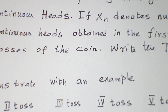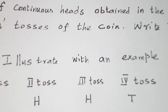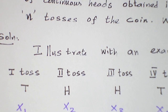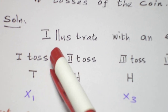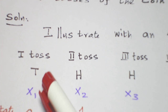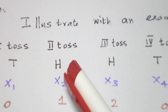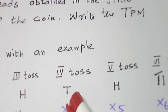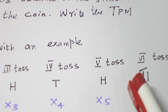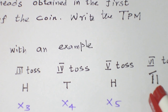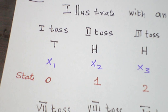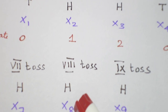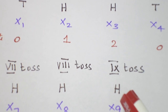Now for writing the TPM, let me see one example. I am going to toss a coin nine times. First time I am getting a tail. Second time I am getting a head. Third time I am getting a head. Fourth time I am getting a tail. Fifth time I am getting a head. Sixth time I am getting a tail. Seventh time I am getting a head. Eighth time I am getting a head. Ninth time I am getting a head.